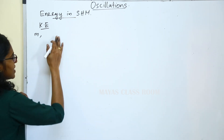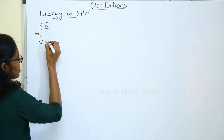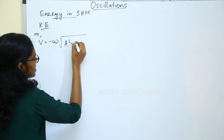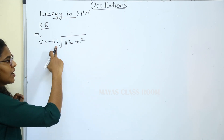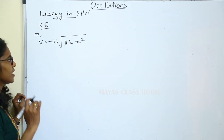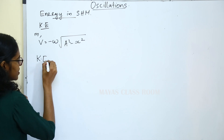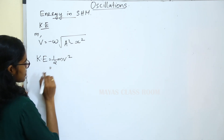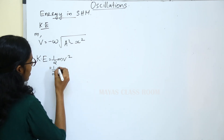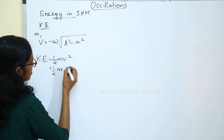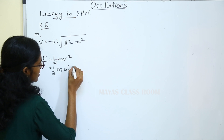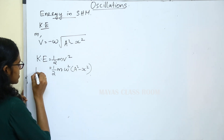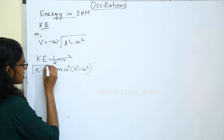The velocity equation: V is equal to minus omega into root of (a squared minus x squared). If we have the kinetic energy equation, kinetic energy is equal to half mv squared. If we substitute, that is equal to half into m into v squared, which gives omega squared into (a squared minus x squared). Then kinetic energy equals half m omega squared into (a squared minus x squared).